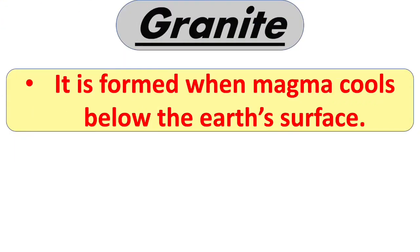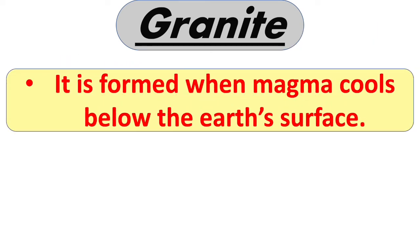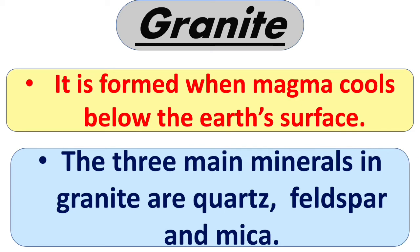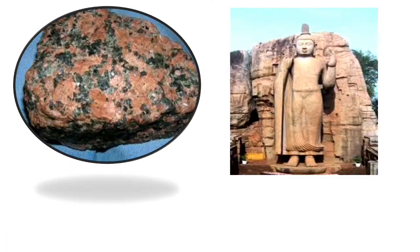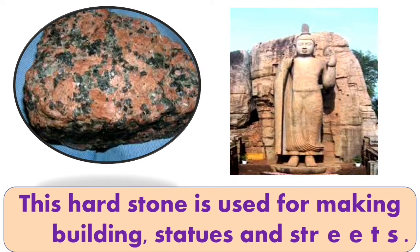First is granite. It is formed when magma cools below the earth's surface. The three main minerals in granite are quartz, feldspar, and mica. This hard stone is used for making buildings, statues, and streets.